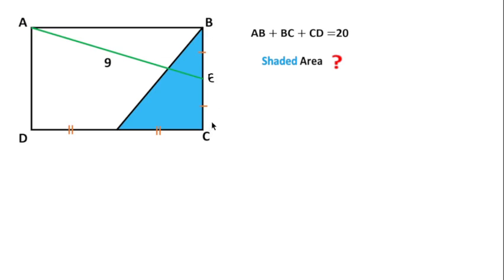It is given AB + BC + CD = 20, and we have to find this shaded area, that is the area of this blue triangle. This question is asked in 2020 Indian Mathematics Olympiad, so I am going to solve this question.